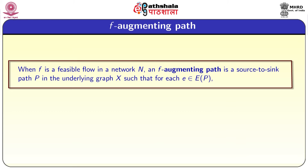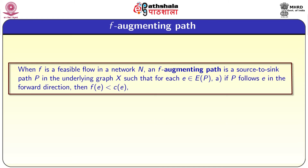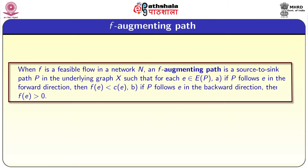We are going to define an f-augmenting path. When f is a feasible flow in a network N, an f-augmenting path is a source-to-sink path P in the underlying graph X. The underlying graph X means we remove the directions from the network. For each edge e belonging to the edge set of P: if P follows e in the forward direction, then f(e) must be less than c(e); if P follows e in the backward direction, then f(e) must be greater than 0.